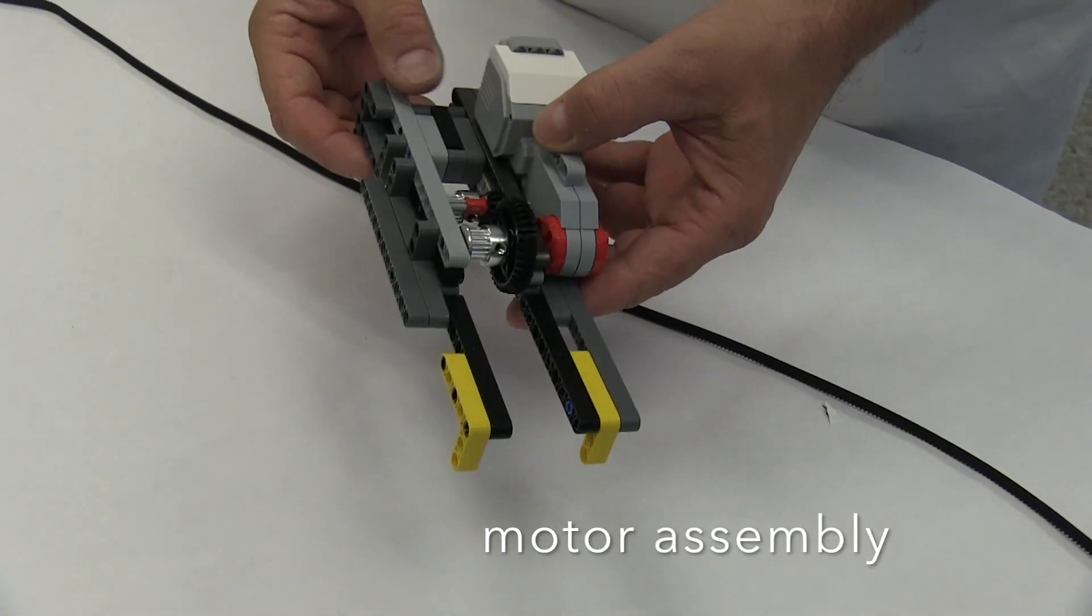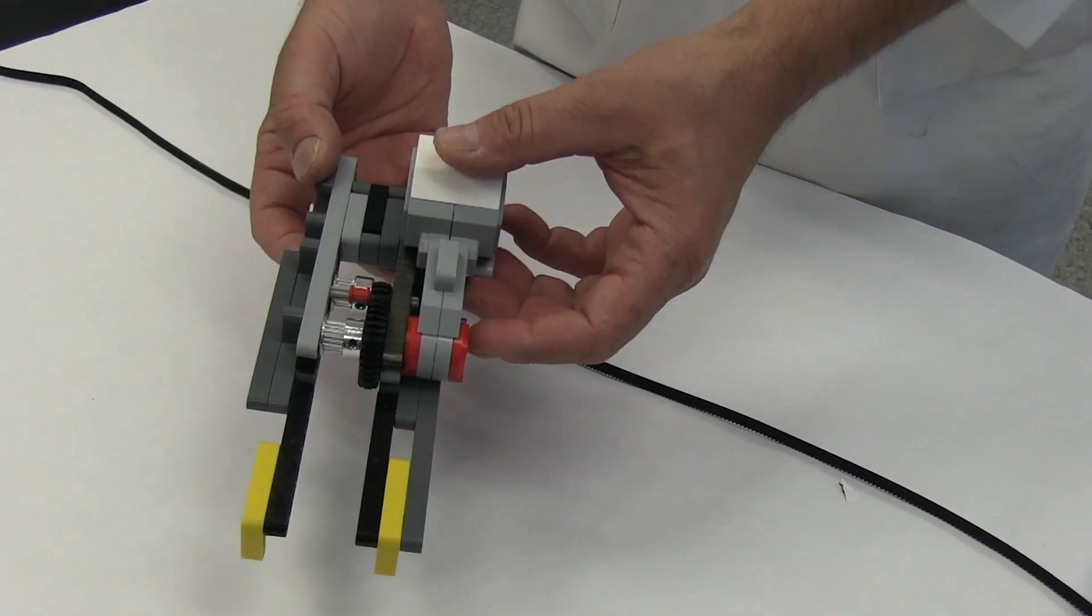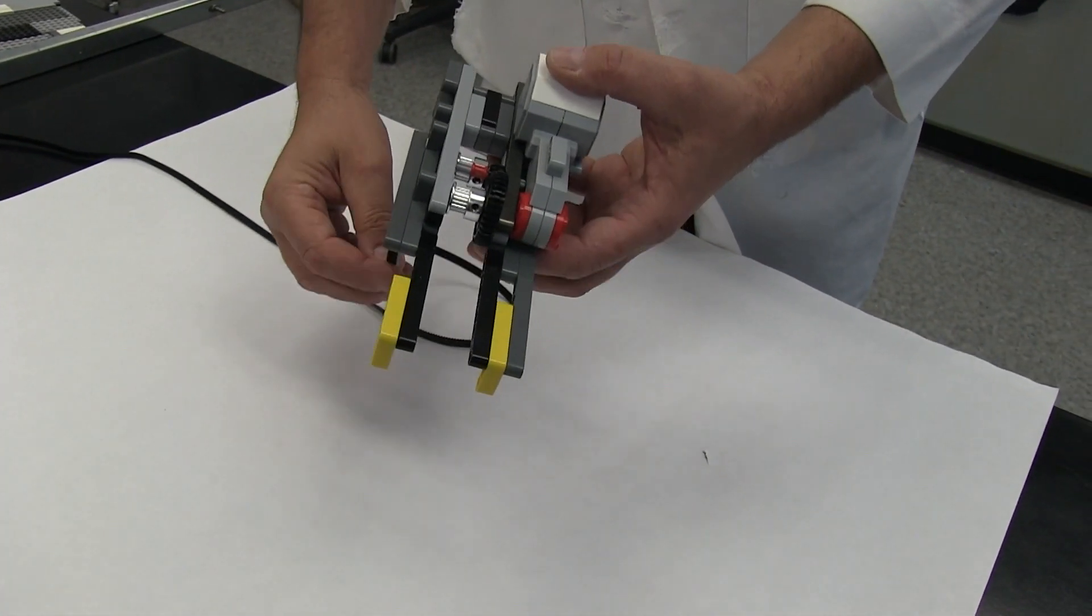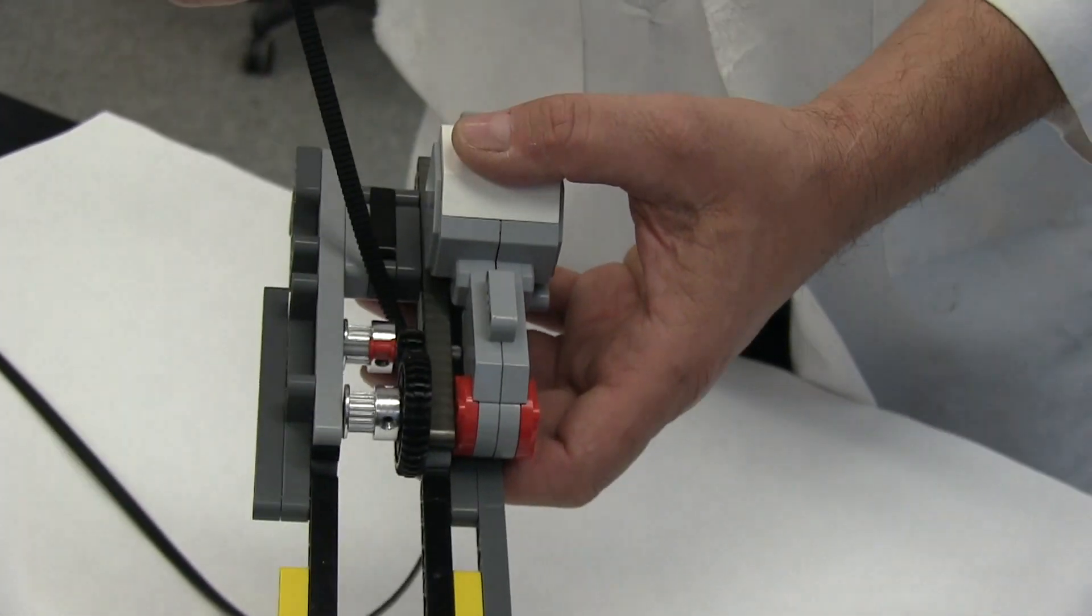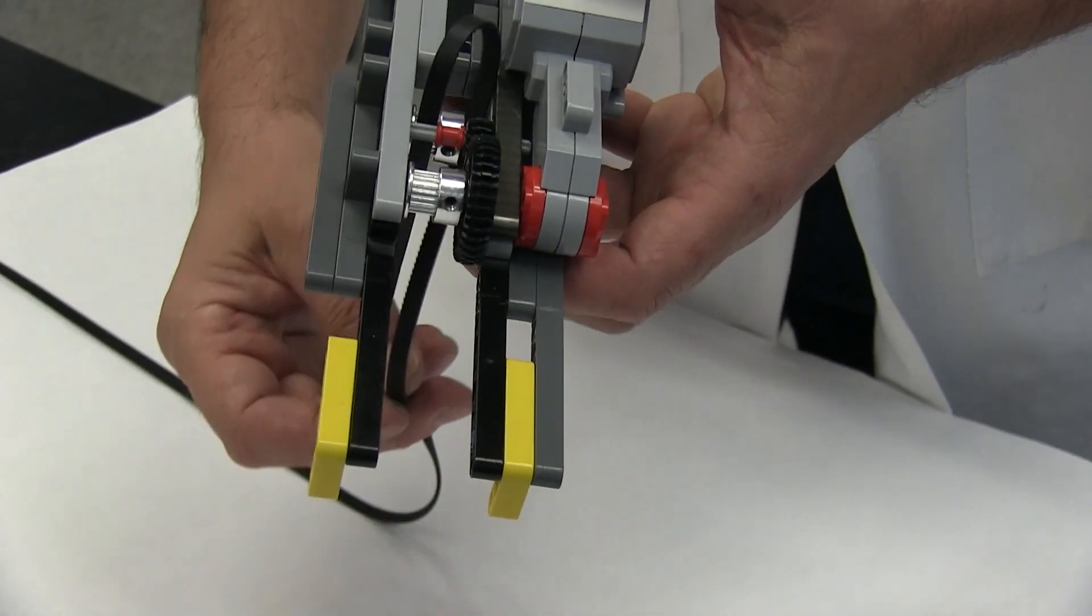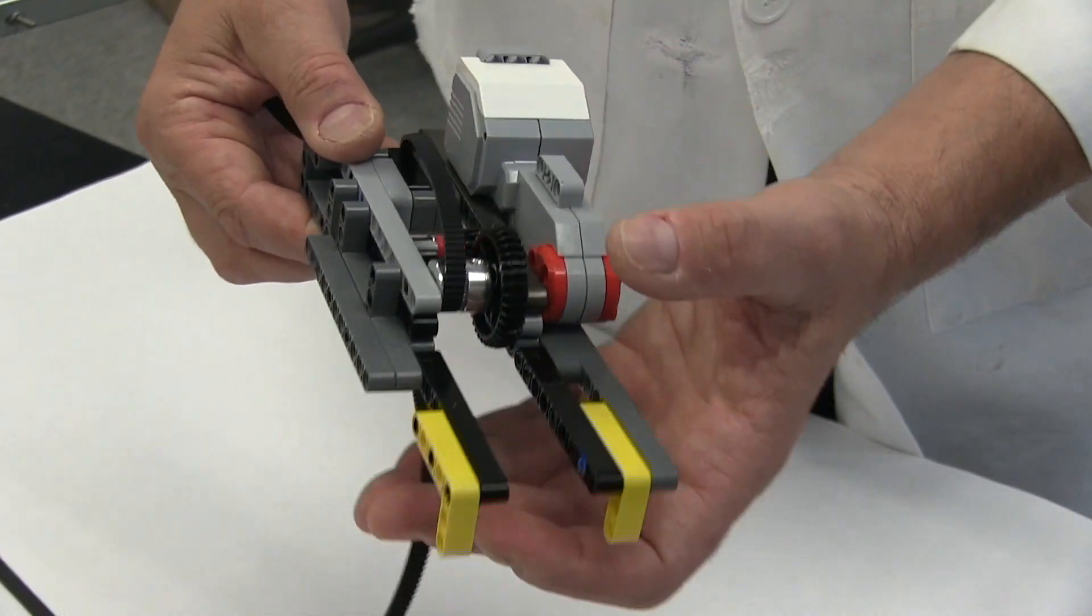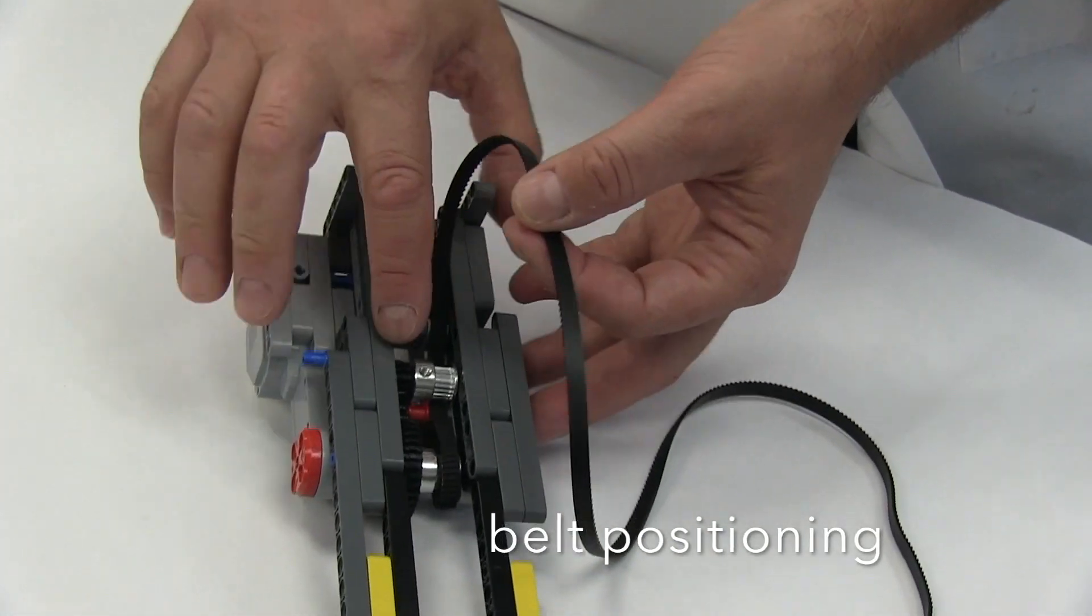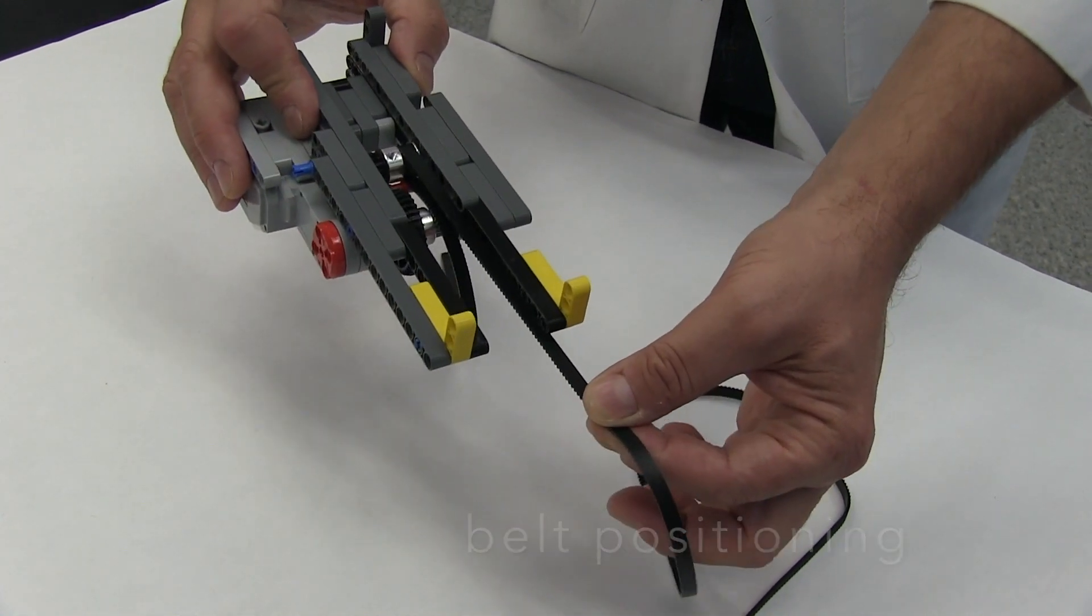We'll begin by showing you how to install the belt into the motor assembly pulley system. This will slide the robotic arm left and right on the fraction collector platform. Here we are positioning the belt onto the pulley such that it grips the gears in the motor assembly unit.